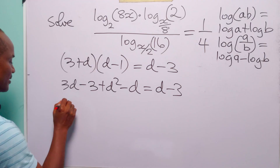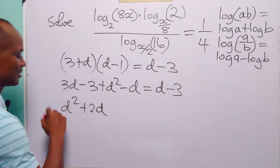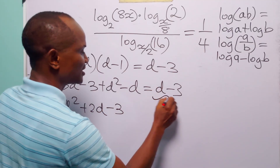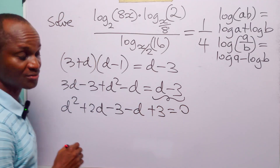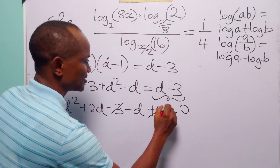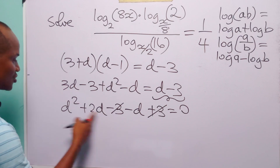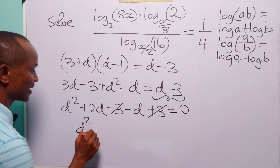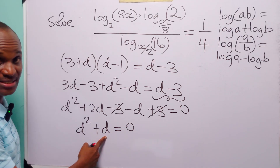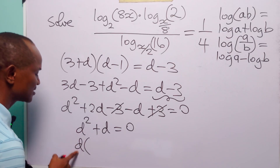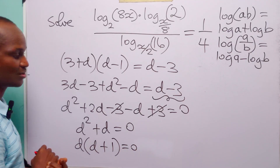From here: d² + 2d − 3 = d − 3. Moving terms to the left gives d² + 2d − 3 − d + 3 = 0. The −3 and +3 cancel, and 2d − d = d, so we have d² + d = 0.